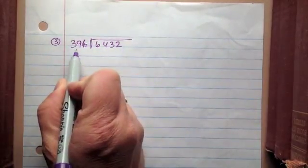Okay, so let's try this third problem, and this problem is going to give us an answer that will be a repeating decimal, and I'll show you what that looks like when you're using the standard algorithm for division. So we have 6432 divided by 396.